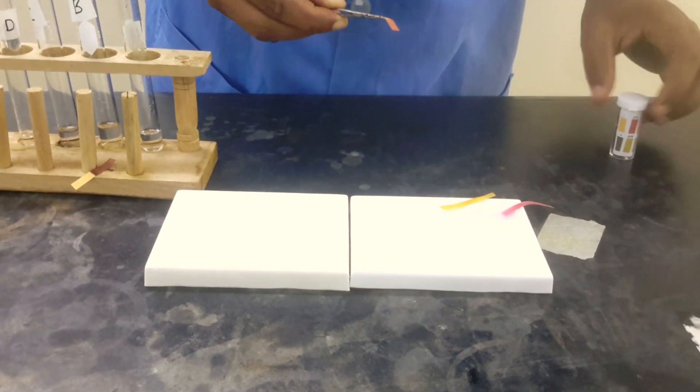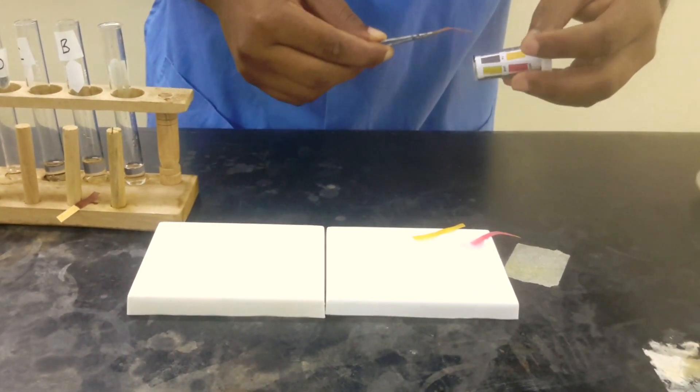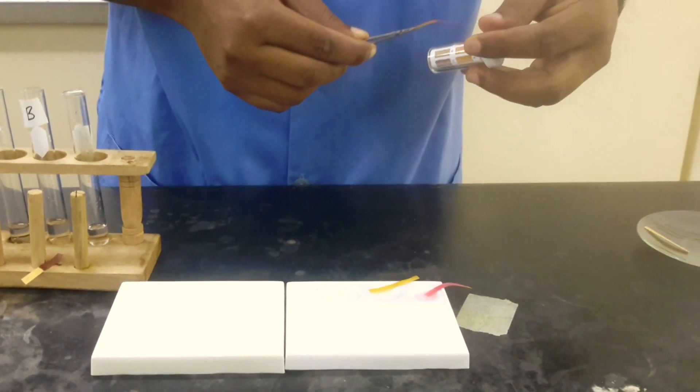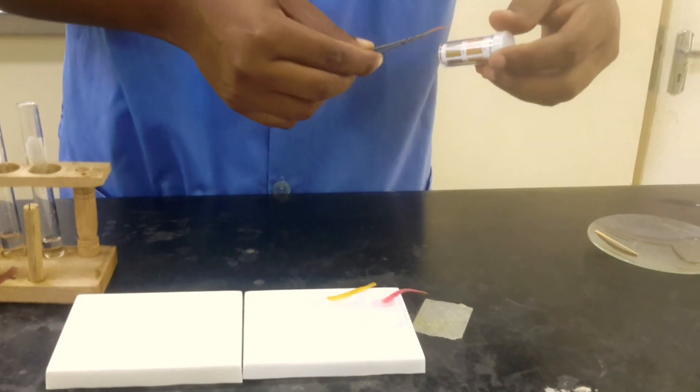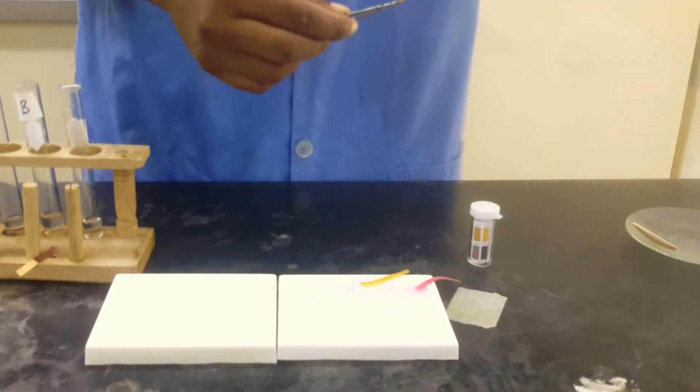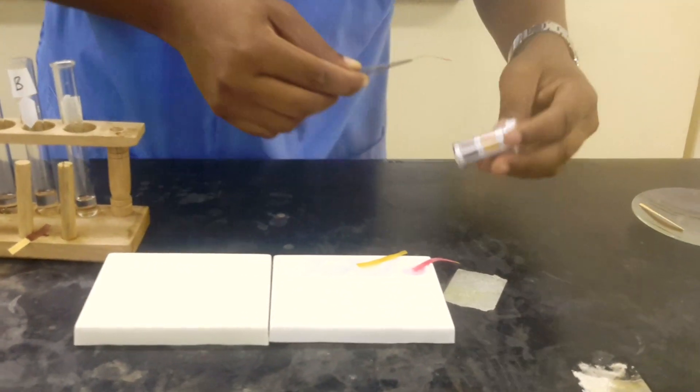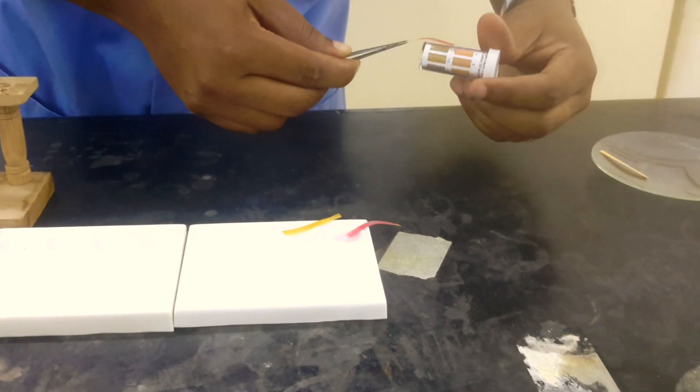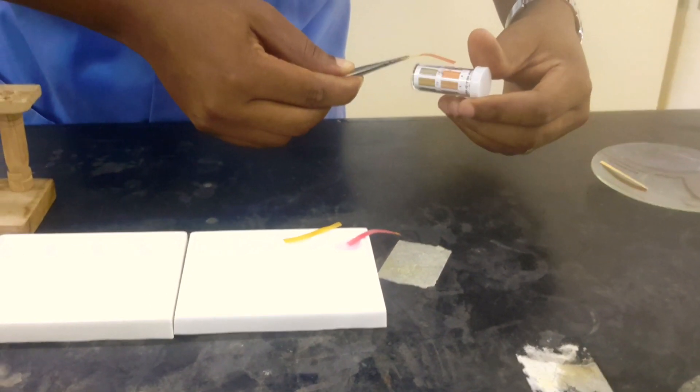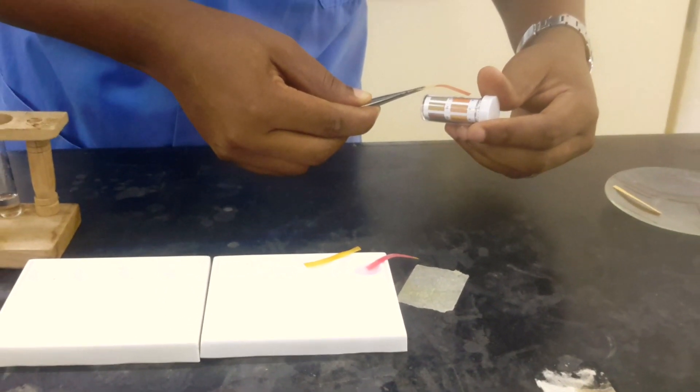So for D, we dip and we're going to match to see which color that corresponds with. Now this is looking like, let's see, like four.